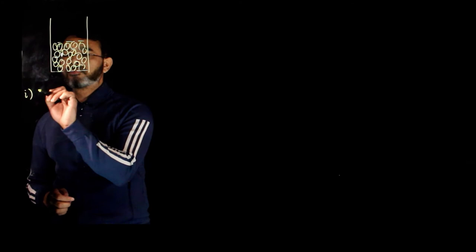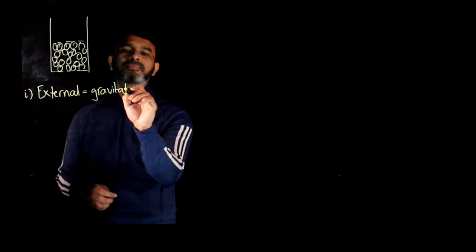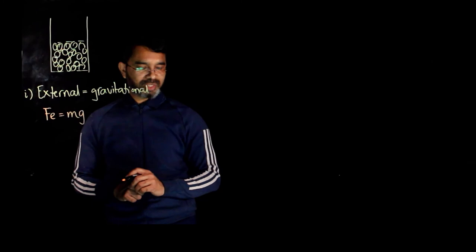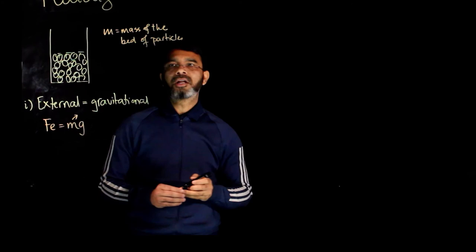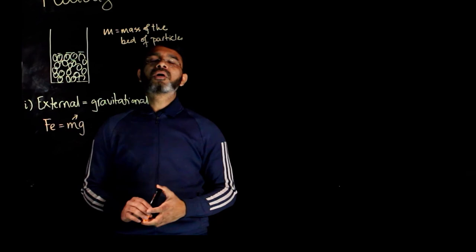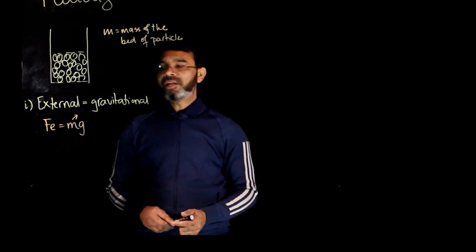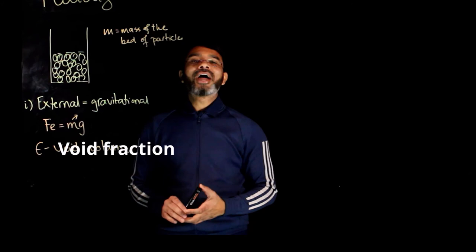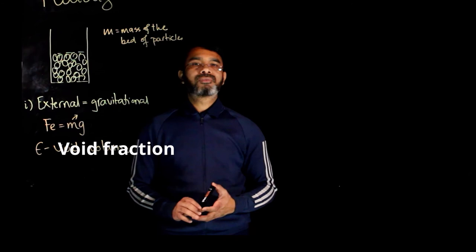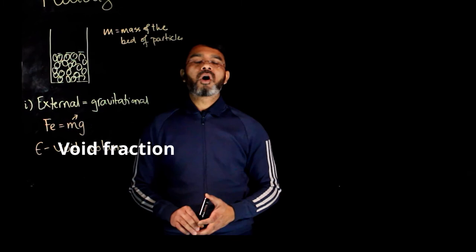For the case of fluidization, the external force — the gravitational force — is given by F equals mg, where m is the mass of the bed. To define the mass of the bed of particles, we need to know the volume of particles in the bed. For that, we define something called the void fraction. For a solid bed, the void fraction is defined as the fraction of volume of the bed which is void.